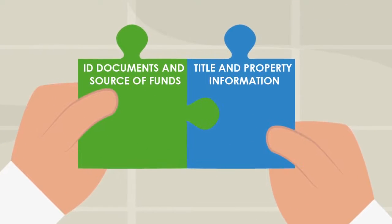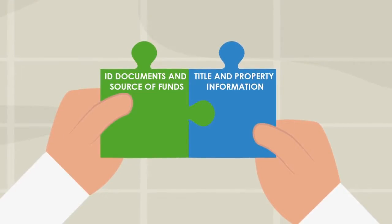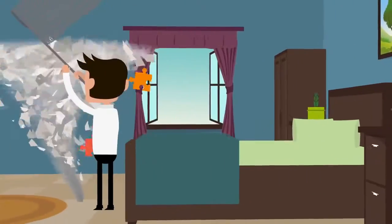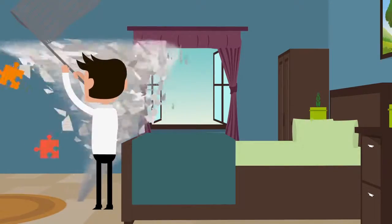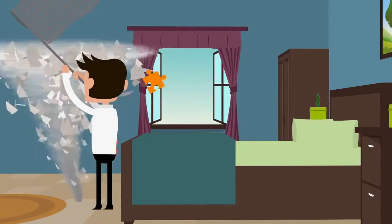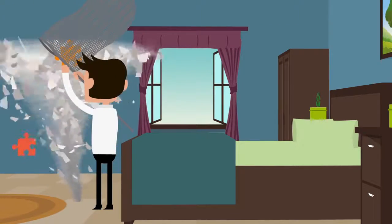When you sell your property your conveyancer will need to get a copy of the title deeds and you'll need to provide information about the property. By doing this before a buyer is found your conveyancer can help you deal with any missing paperwork in plenty of time. This can save as much as 11 days off the conveyancing process later on.